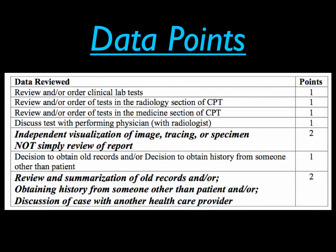The amount and complexity of data reviewed are quantified into data points by referring to the following table. It is important to check the radiology interpretation box — interpreted by MD gives you two points, while discussed with radiologist only gives you one point. You can get data points from simply ordering tests or deciding to obtain old records. For a study to count as an interpretation, clinical indication must be documented, at least three components of typical interpretive elements documented, and at least three pertinent positive and negative findings documented. For example, an EKG needs rate, rhythm, axis, intervals, and ST segments. Ordering an x-ray gives one point, and indicating direct visualization gives two points, for a total of three data points.